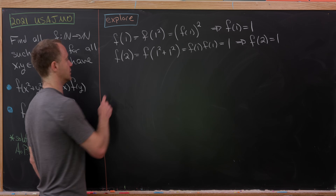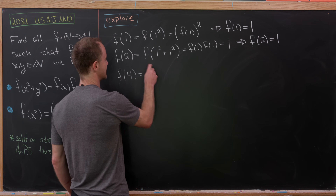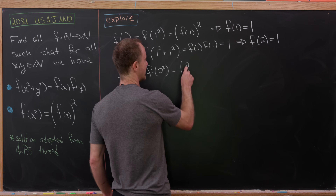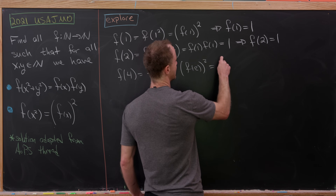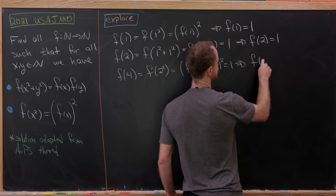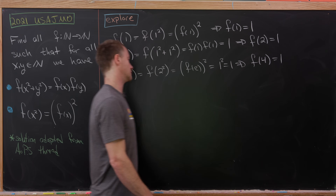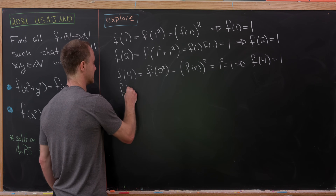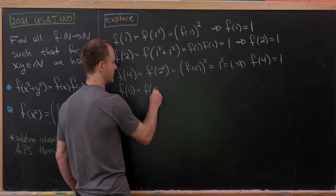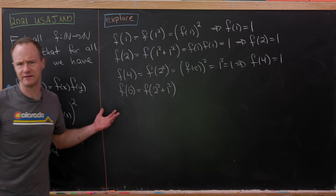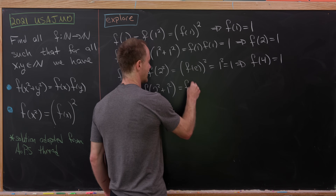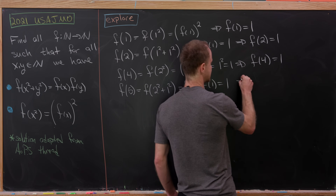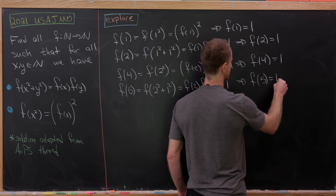First, f(4) = f(2²) = f(2)² = 1² = 1. Then f(5) = f(2² + 1²) = f(2)·f(1) = 1·1 = 1. So f(4) = 1 and f(5) = 1.